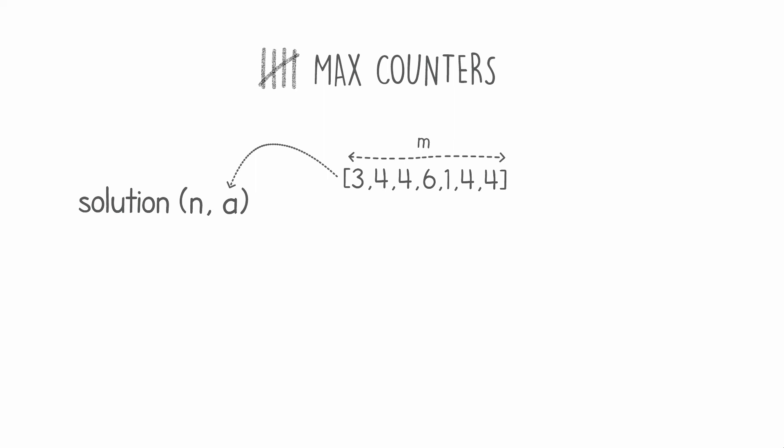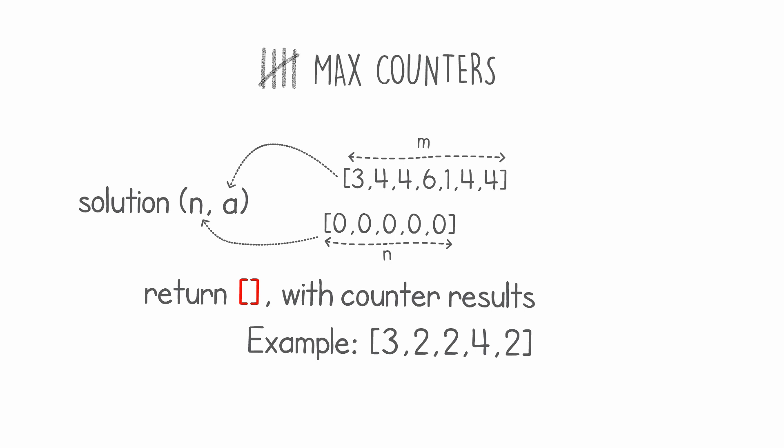The first parameter, n, is simply the size of our counters. In the previous example, n was 5, we had five counters. Once we perform our algorithm, all we need to do is return the array with the counter results. In our previous example, we would have returned an array containing [3, 2, 2, 4, 2], and that would have given us a correct solution.